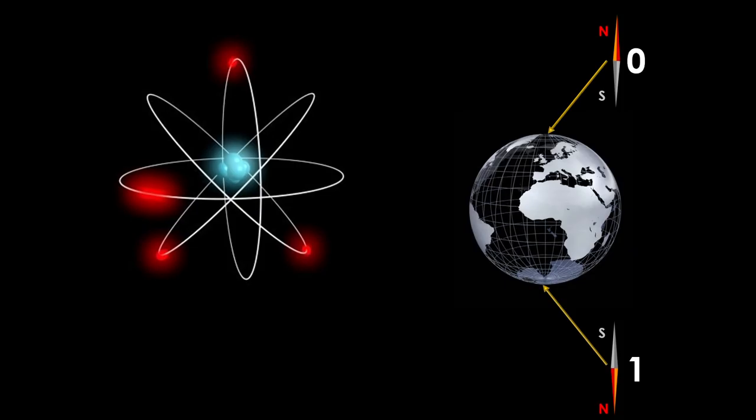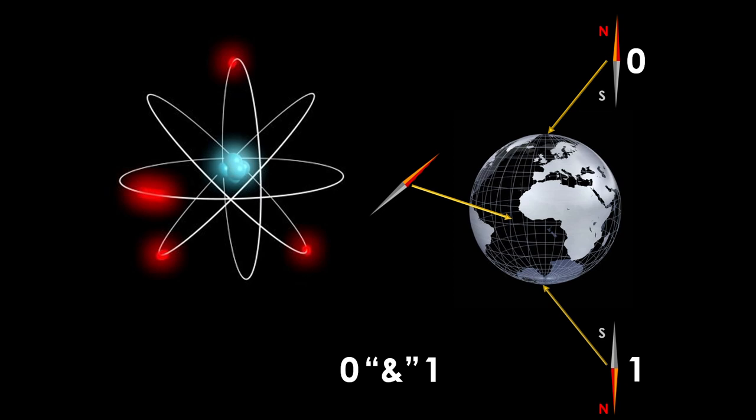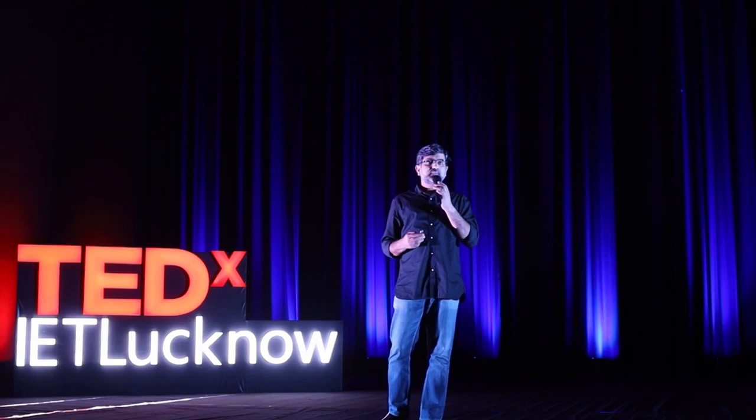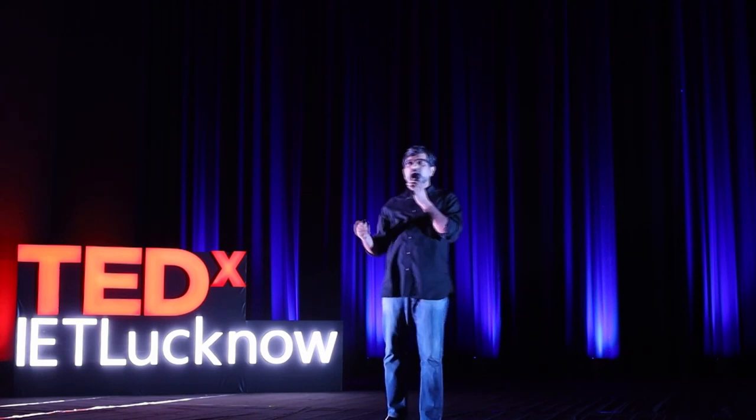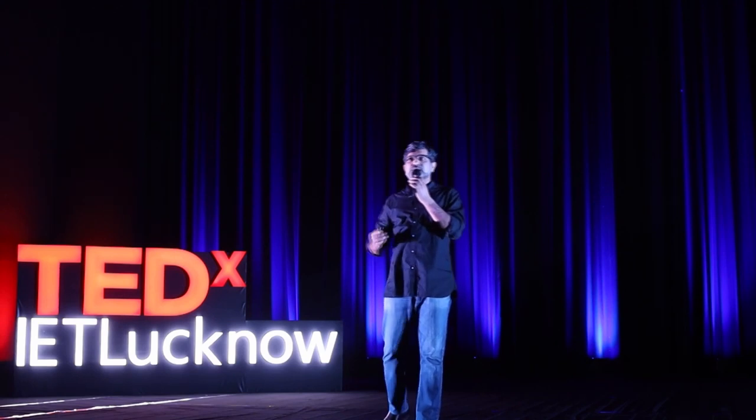To understand the different possible quantum states, we can look at a globe. On this globe, the north pole and the south pole correspond to 0 and 1 — the two possibilities of a bit. But in addition, you have all these other points on the surface of the globe. For example, if you are at the equator, the way we describe this state is as if it's both 0 and 1 at the same time — this is called a quantum superposition of 0 and 1. It does not have a well-defined property until you decide to measure it. And even though there are infinite possibilities on this globe, when you try to detect, the answer is still 0 or 1.